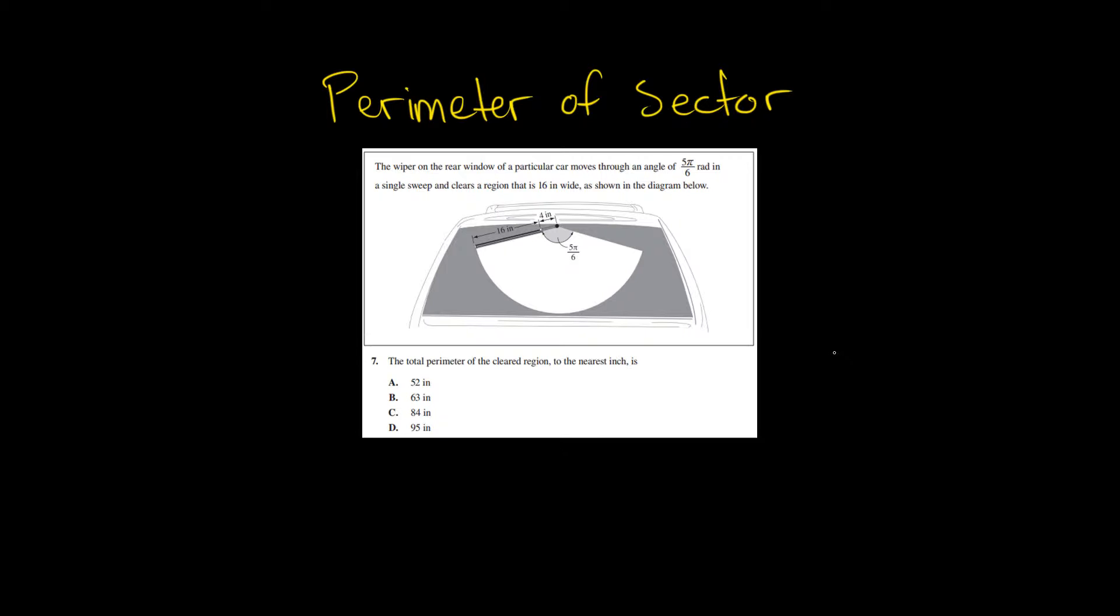The problem states: the wiper on the rear window of a particular car moves through an angle of 5π over 6 radians in one single sweep and clears a region that is 16 inches wide as shown in the diagram below. So what we have to do is find the total perimeter of the cleared region to the nearest inch.